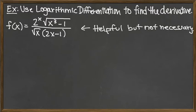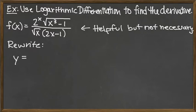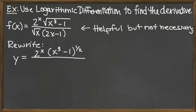When we do logarithmic differentiation, first we might need to rewrite. For this particular one, we see a couple of square roots, so we want to rewrite those using the power one-half. Also, instead of carrying on f(x), I'll write it as y equals, just for simplicity. So here we have y equals the fraction with the top being 2 to the x times x cubed minus 1 to the one-half power, and on the bottom, x to the one-half power times the factor 2x minus 1.